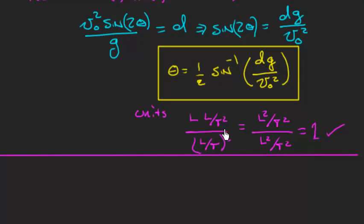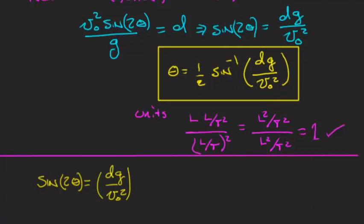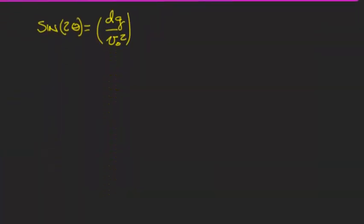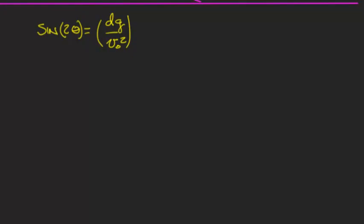A really good skill to have as a physics student, as an engineer, is to take mathematical expressions like this and see the meaning in it. That's what we're going to try to do right now. So in my attempt to make sense of what's going on here, what I'm going to do is instead of looking at this boxed answer, I'm going to look at the previous line when the answer takes a slightly different form, that is sine 2 theta equals dg over v0 squared.